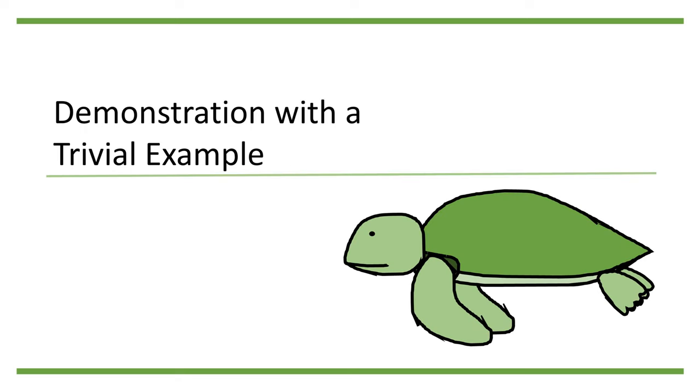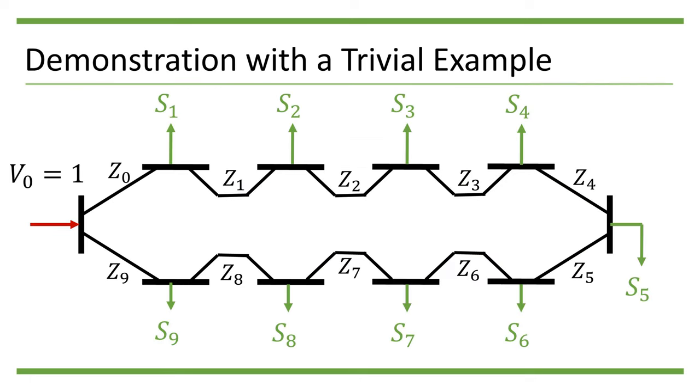Okay, let us demonstrate the concepts presented before by a trivial example. This is a ring-structured microgrid of 10 nodes, with the 0th node being the slack bus. Each node draws the same power, s = -0.05 per unit from the grid, and each line has the same impedance.